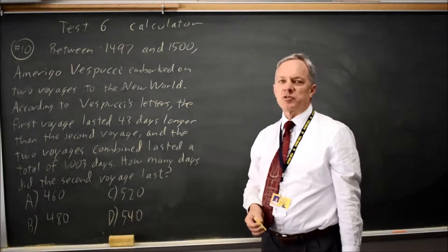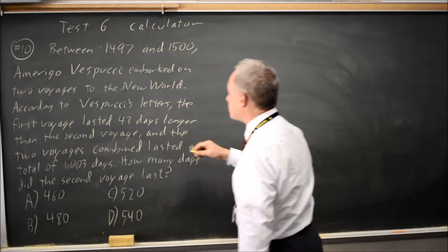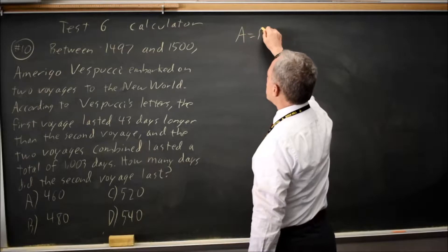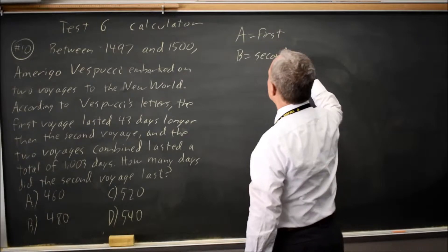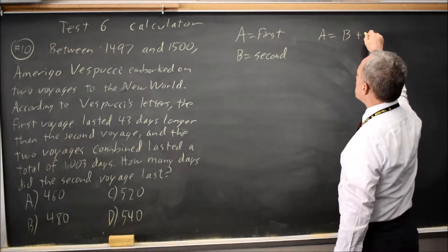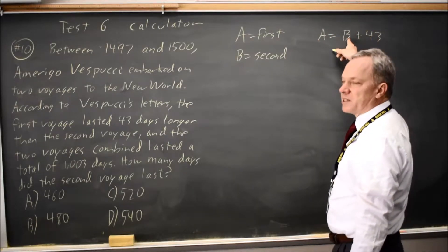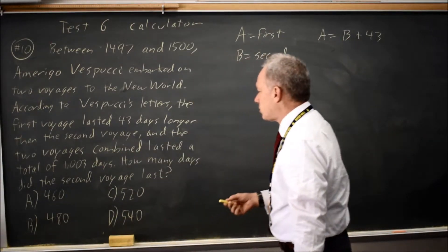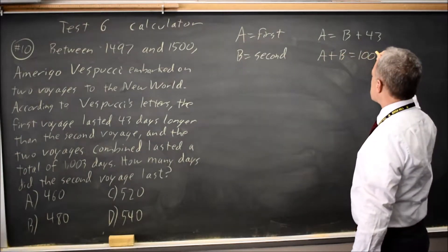We have several options for how to solve that. The first equation says the first voyage was 43 days longer than the second voyage, so let's call them A equals first, B equals second. That first equation says that A is B plus 43 because the first one is longer by 43 days than the second one. The second equation says that the two voyages combined lasted a total of 1,003 days, so that's A plus B equals 1,003.